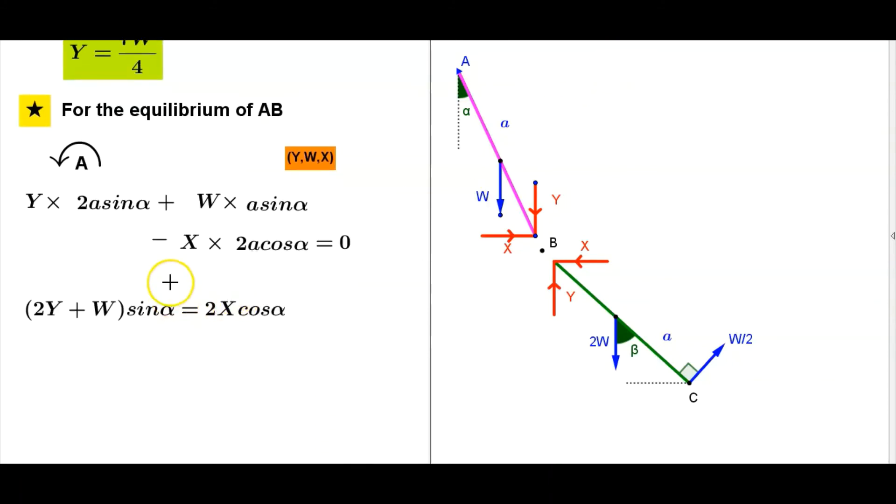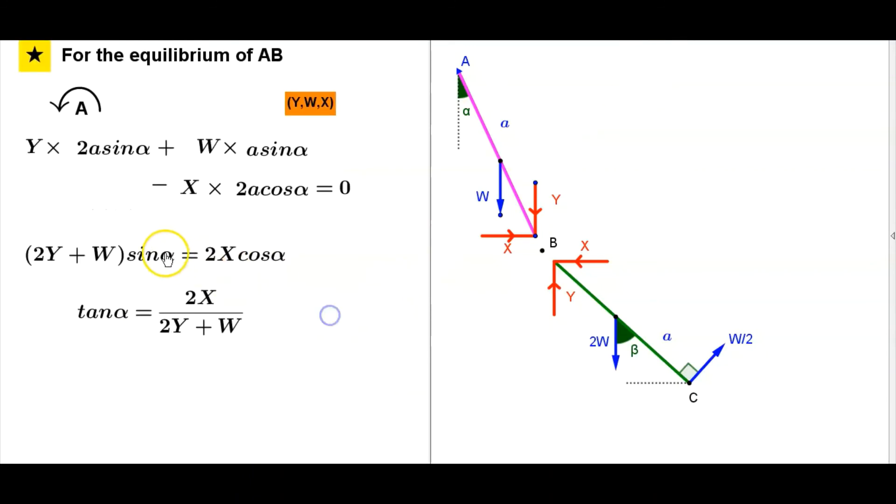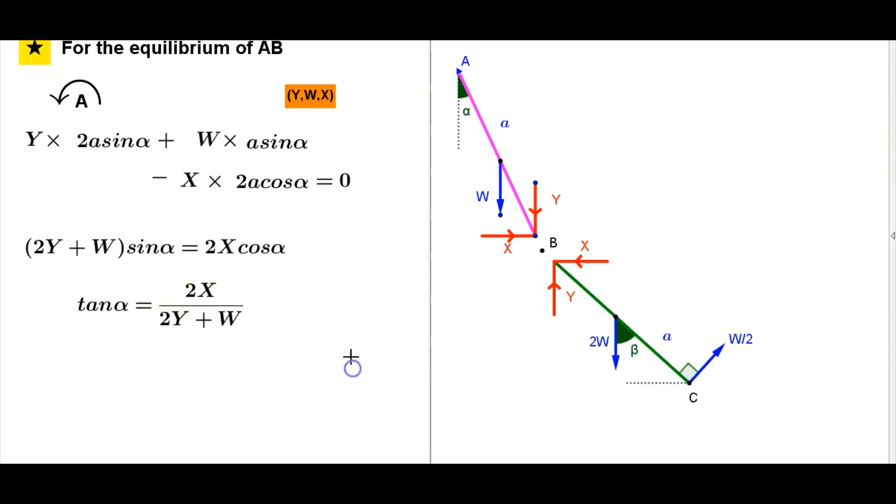In simplifying further, 2Y plus W. A cancel from both sides. Therefore 2Y sin alpha, here W sin alpha. Therefore 2Y plus W times sin alpha equals, other side, 2X cos alpha. Therefore tan alpha equals 2X over 2Y plus W.